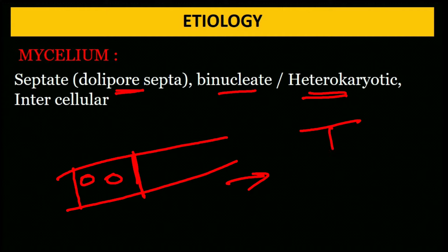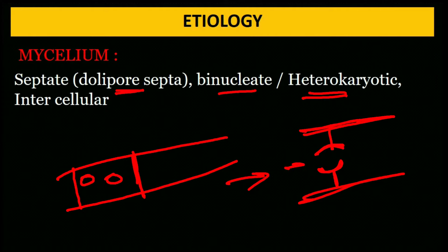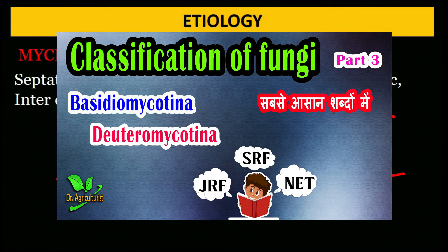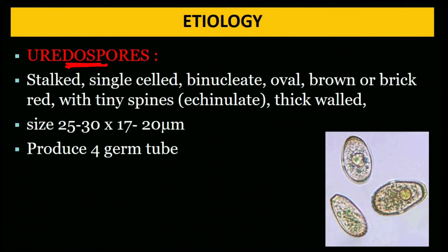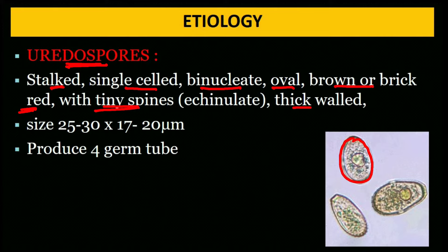The septa have dolipore structure — not a simple cross wall. There is a pore present in the middle of the wall with space around it — this is called dolipore septum. The uredospore is stalked, single-celled, binucleate, oval, brown and brick red in color with tiny spines and thick wall.